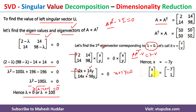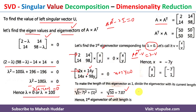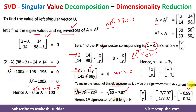We convert this eigenvector into a unit eigenvector by dividing by its length. The length is √((−7)² + 1²) = √50 ≈ 7.07. Dividing the eigenvector by this length: x = −7/7.07 ≈ −0.99, y = 1/7.07 ≈ 0.14. This is the unit eigenvector corresponding to λ = 0.